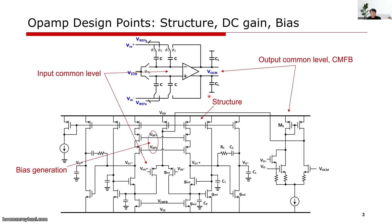In designing an op-amp for given specifications, we will first consider the structure that satisfies sufficient DC gain requirements and DC constraints like input common level, output common level, and signal swing ranges. For high gain, we can use cascode or gain-boosting loops for high output impedance, and we can also consider multi-stage implementations.